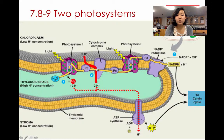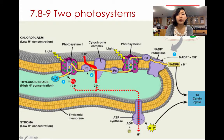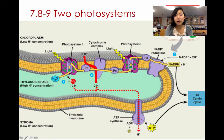As the electron is moving and the protons go into the thylakoid space, they can actually exit through ATP synthase, and it creates ATP the same way that ATP synthase worked for cellular respiration. So ultimately, ATP was created through the electron transport chain and chemiosmosis — oxidative phosphorylation, ultimately.